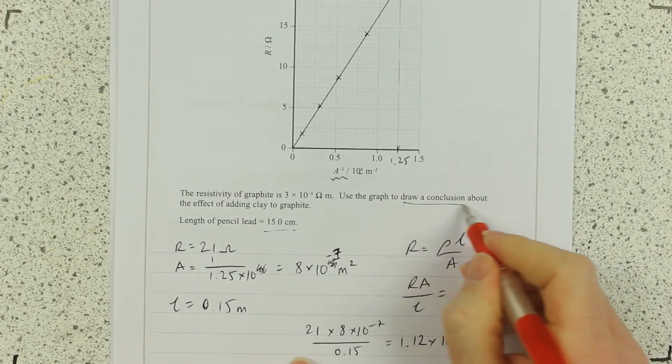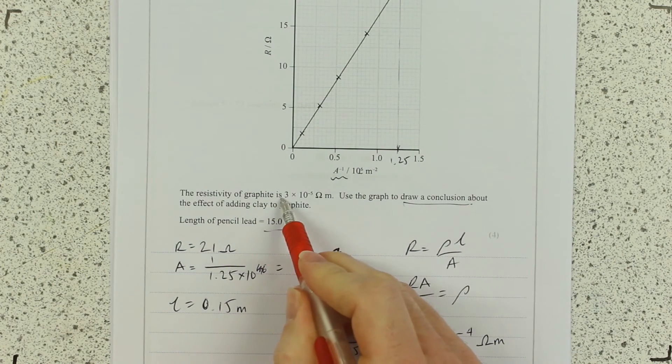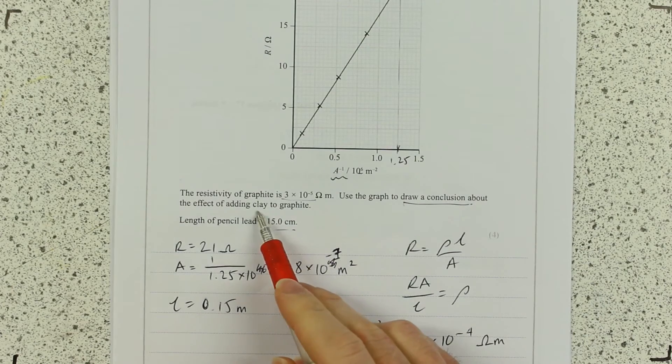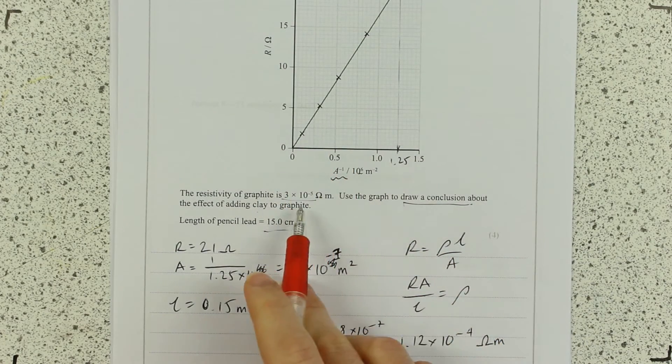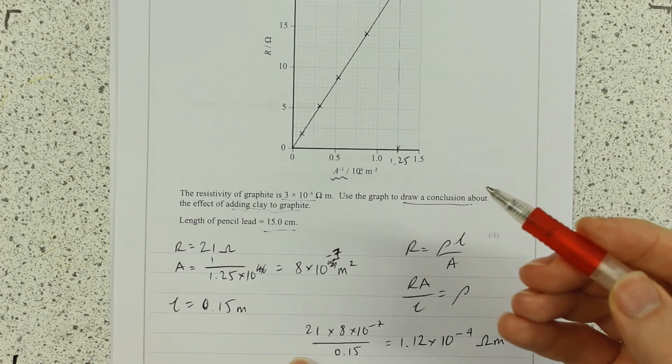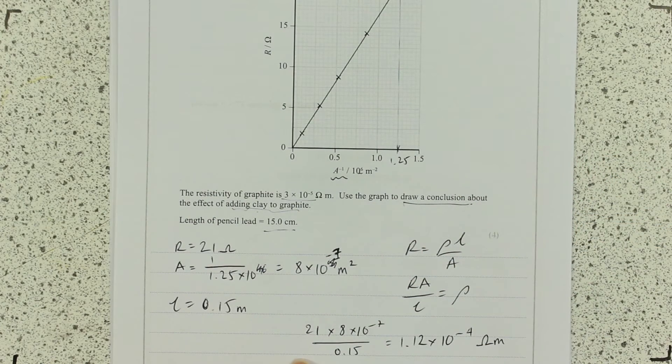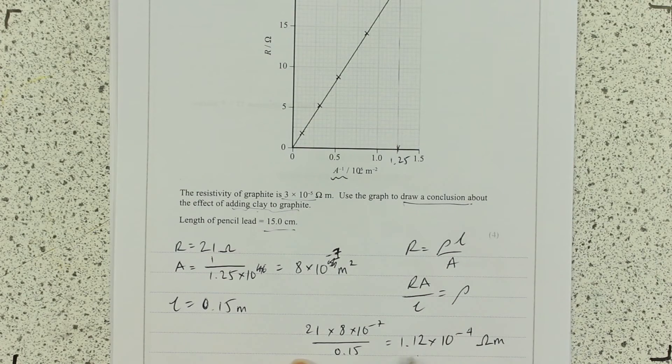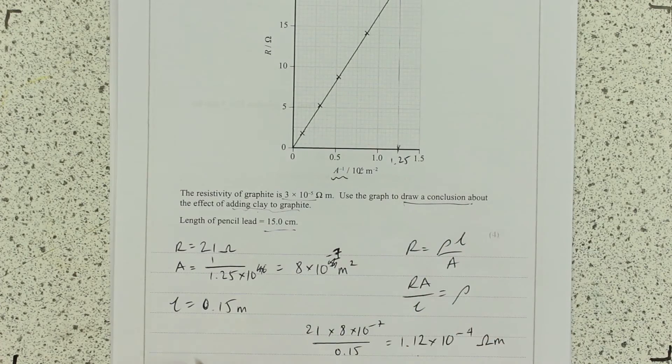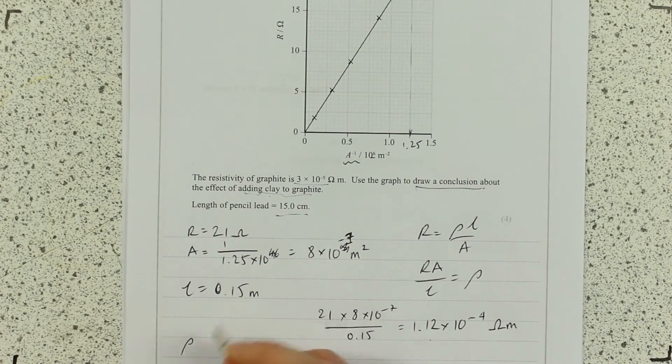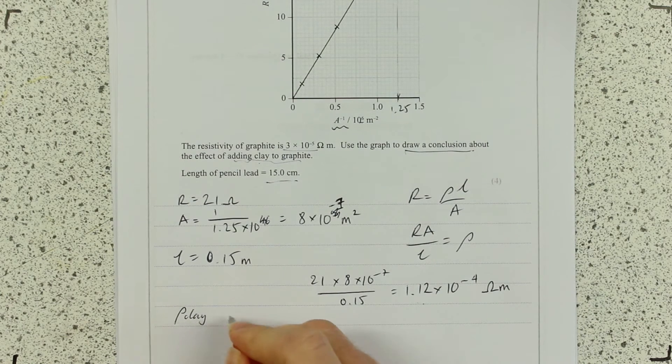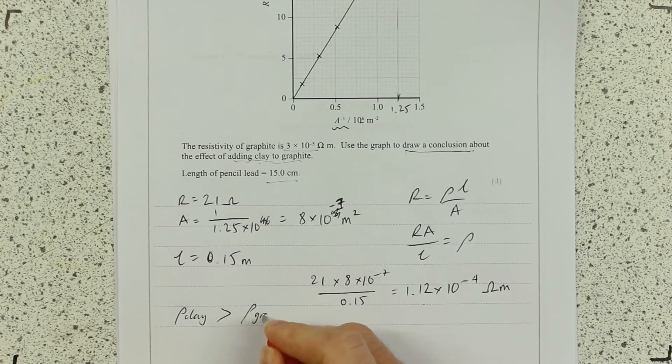What conclusion can I add? Graphite is this. Resistivity of clay to graphite. Well, we know, don't we, that we know that they're a mixture of clay and graphite. So we can say then that the resistivity is greater. Larger than that. Resistivity of clay is greater than resistivity of graphite.